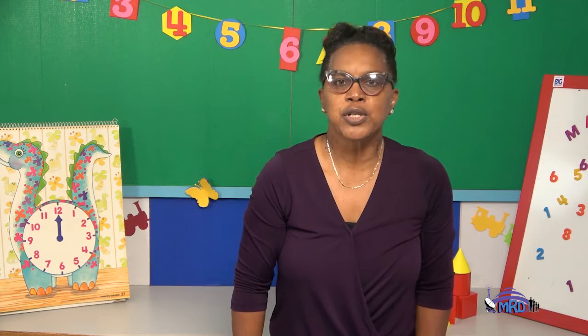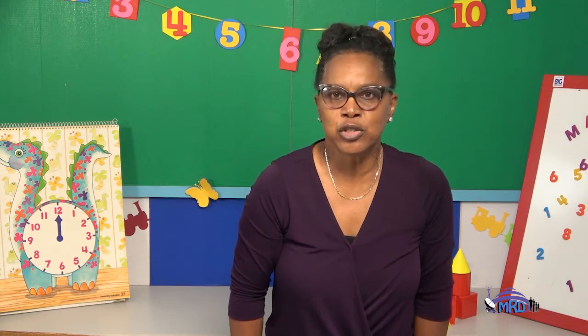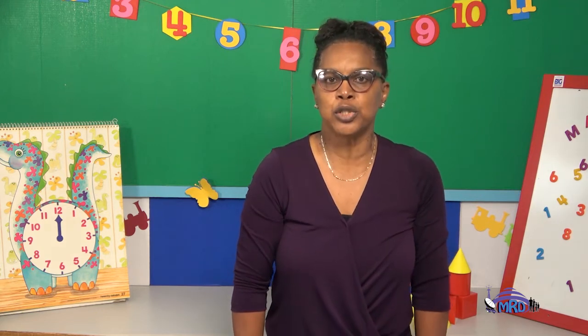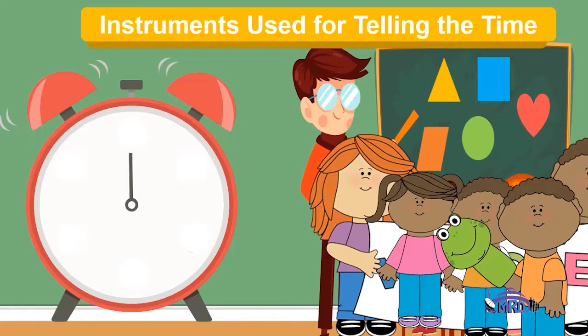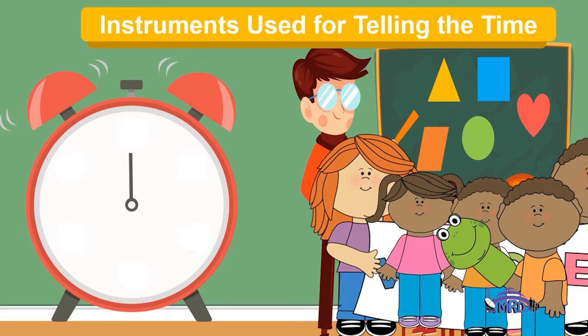Now we are going to sort some instruments into two groups: those that show the time in the analog form and those that show the time in the digital form.